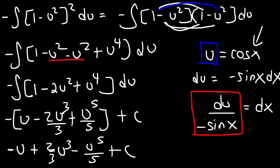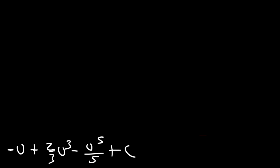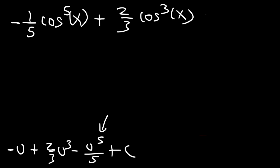Now let's replace u with cos(x). And let's write the expression in standard form, starting from the highest exponent. So it's going to be -(1/5)cos^5(x) + (2/3)cos^3(x) - cos(x) + c. So this is the final answer.